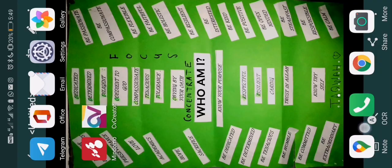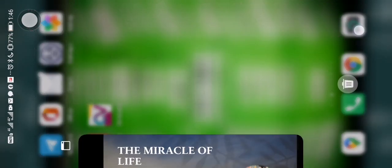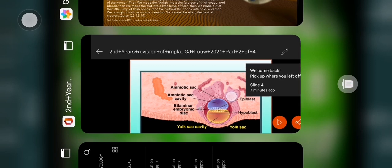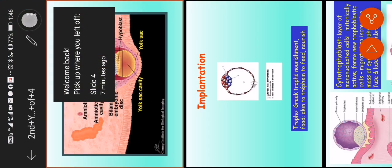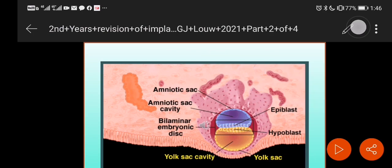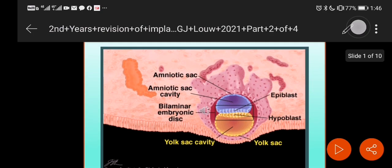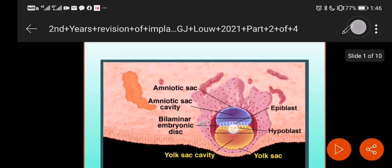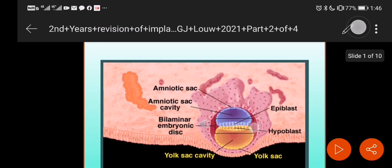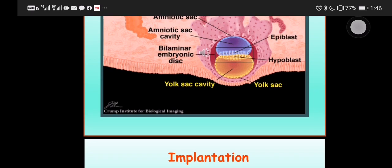So yesterday, we spoke about the fertilization, the beginning when the sperm cell met with the egg cell to form a zygote, and then how that developed, how the growth of the cells occurred to form two germ layers, a bilaminar embryonic disc, as well as three layers after that.